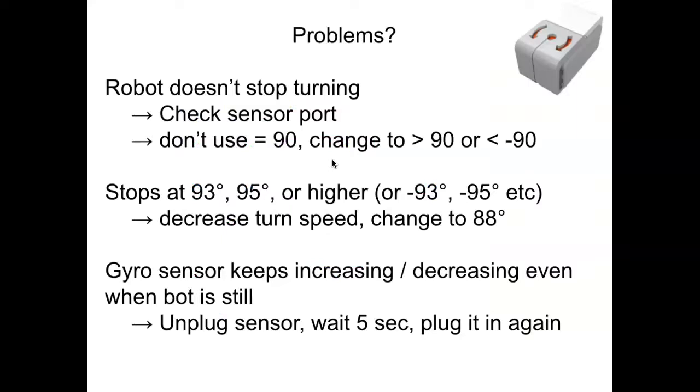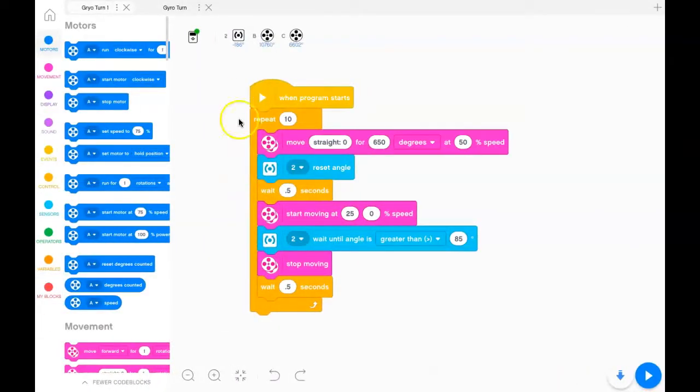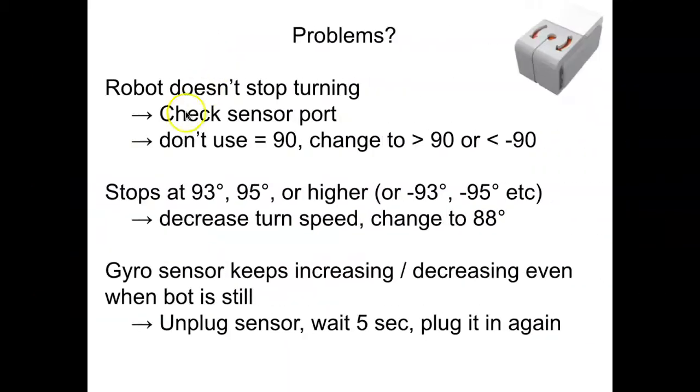A couple of problems you may encounter: if the robot doesn't stop turning, number one, check the sensor port. Make sure the port you're reading in the code—in my case it's port two—matches where you're actually plugged in. You can check that up here on the port view to make sure you've got the right port. Again, make sure you're not using equal to 90 degrees. Change it to greater than 90 or less than negative 90, depending on whether you're doing a turn to the right or left. I'll let you experiment and see which is appropriate for your robot.